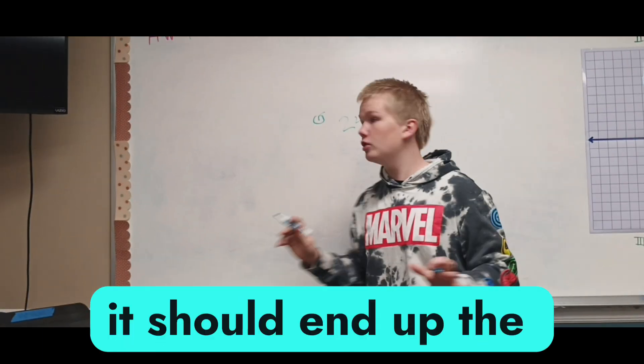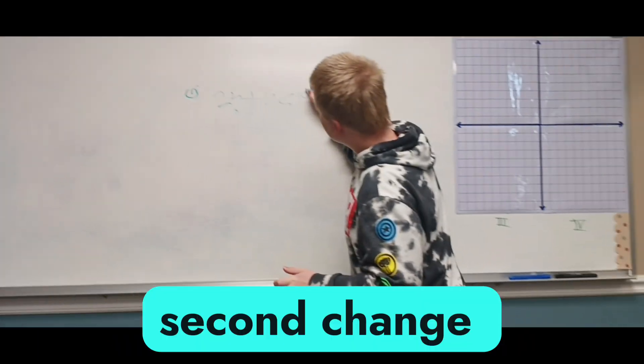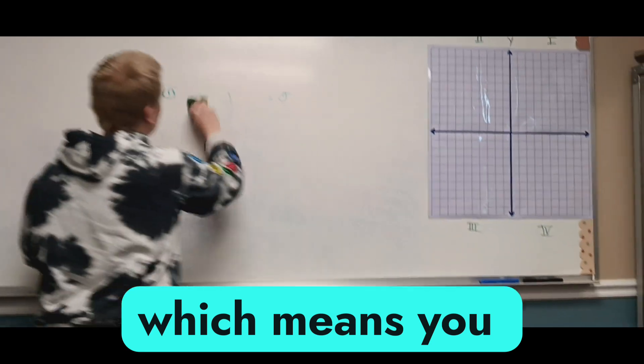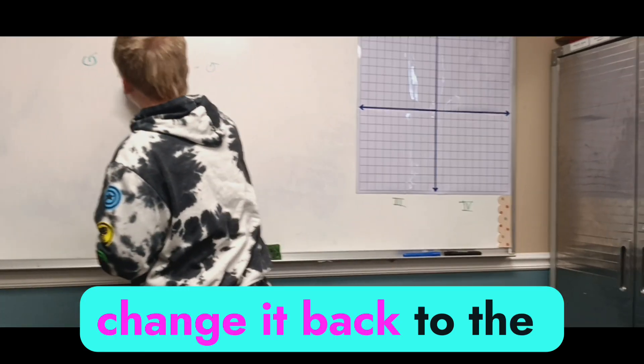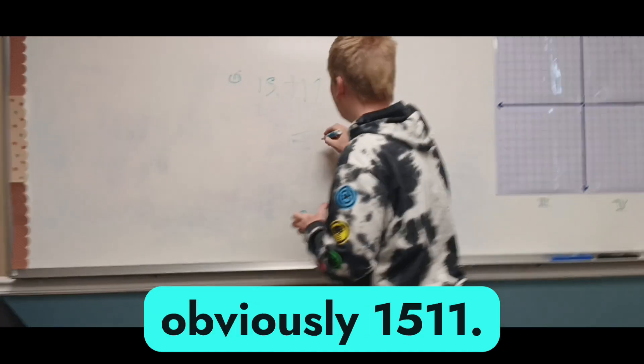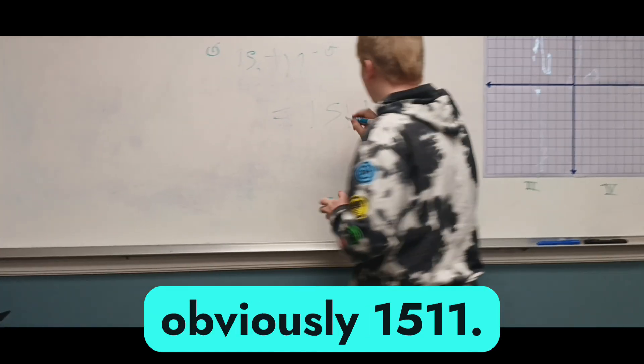Now, no matter how you change this, it should end up the same because you put a second change symbol there, which means you change it back to the original number. So now you have 15 plus 11, which is obviously 1,511.